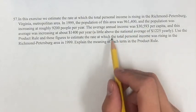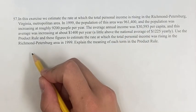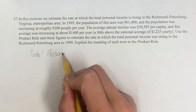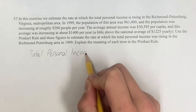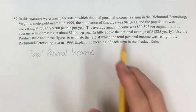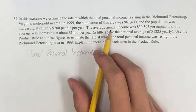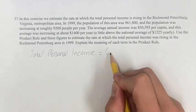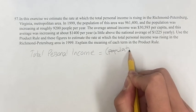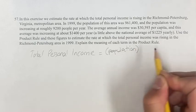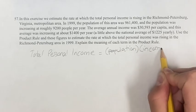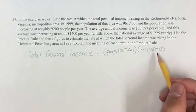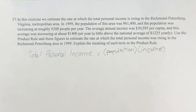First we're going to look at how you would calculate the total personal income. Given that we have the population and the annual income, the total income in the area would be the population times the income. So if you have 10 people making $5, then that's a total of $50 — that sort of thing.